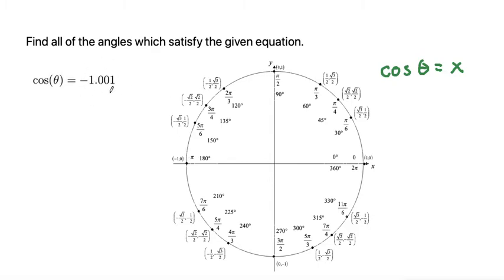So is it possible to have a coordinate that's a larger negative than negative 1? No. The largest negative that we could have on the unit circle is a negative 1.